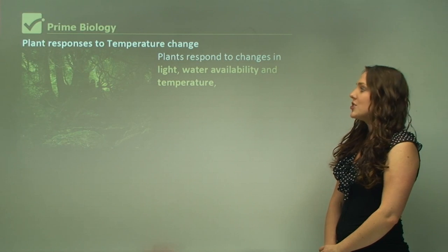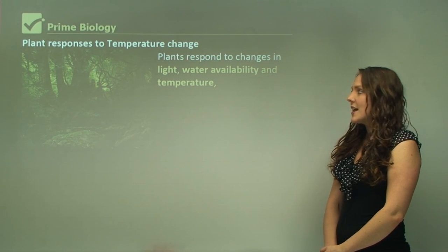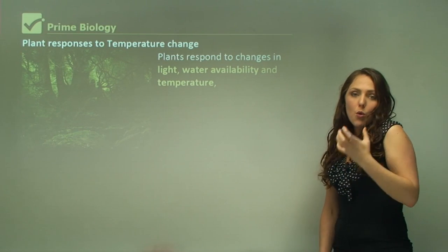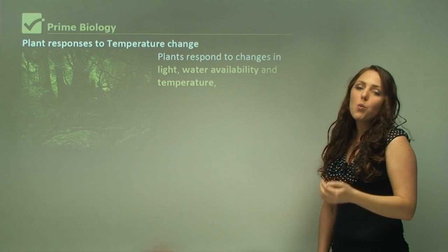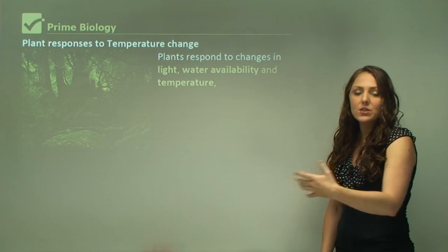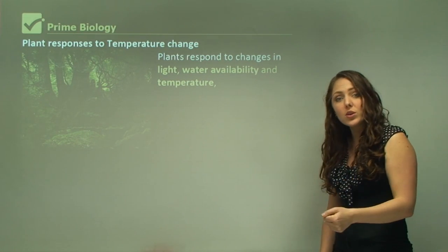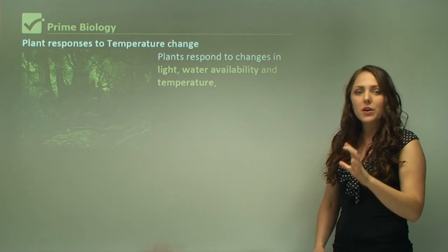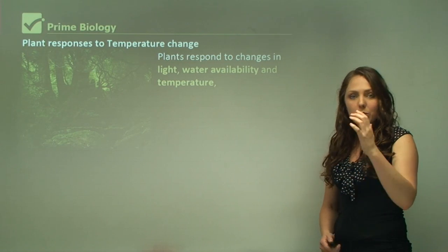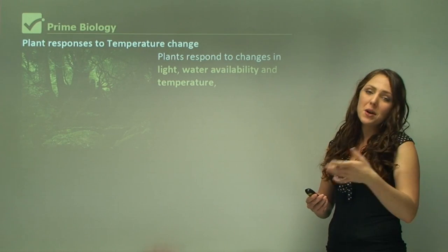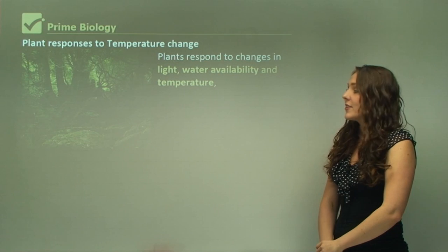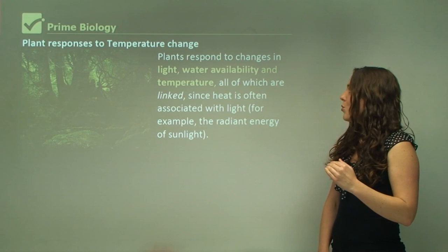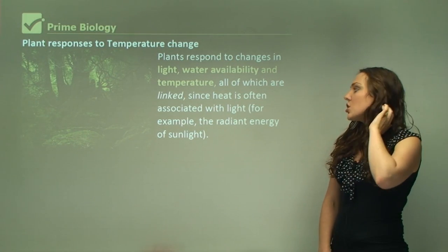Plants respond to changes in light, water availability, and temperature. All plants need some form of light. Water availability might be in the soil or in the surrounding environment — they might be watered every day and be waiting for that water source. Within a certain temperature range plants can survive, but in extreme environments plants will likely die. Light, water availability, and temperature are all linked since heat is often associated with light.